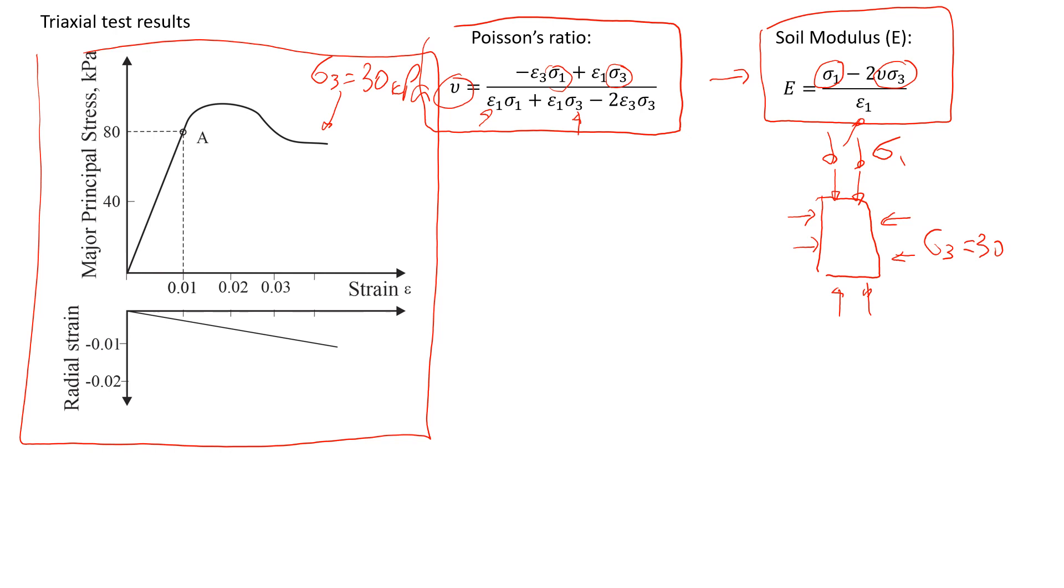What will happen with the soil is it's going to deform. It will have a shape like this. This deformation will be through the major axis, vertical deformation, we call it epsilon1. And this deformation is radial deformation, epsilon3. In this case, it's going to be negative because it's an expansion.